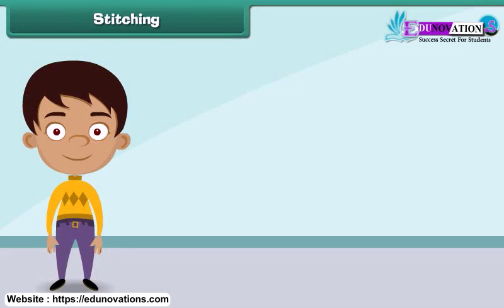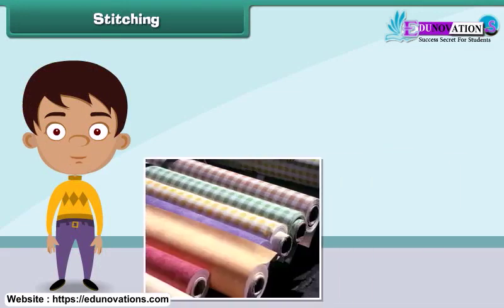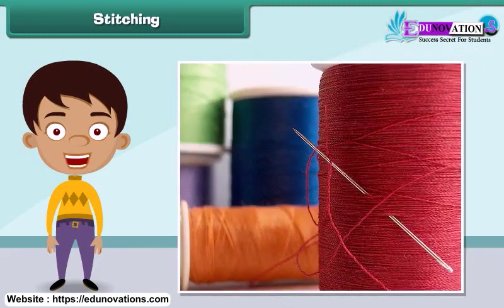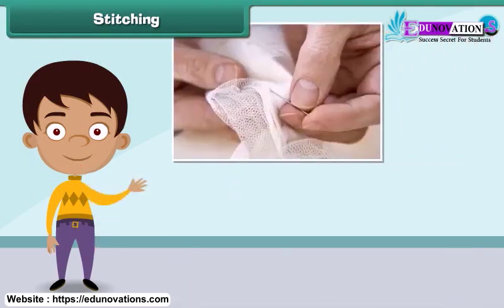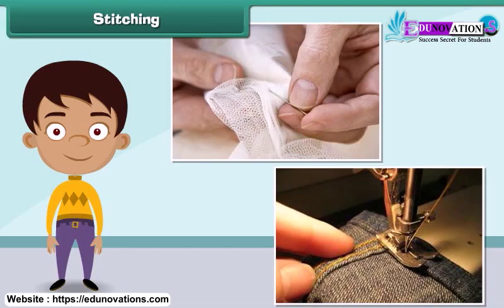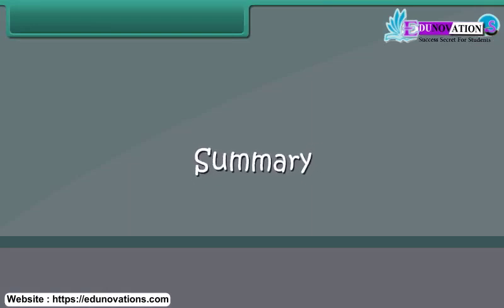Stitching is the process by which fabrics are converted into clothes. It involves sewing a fabric with needle and thread. In olden days, stitching was done by hand, but nowadays stitching is done with machines.